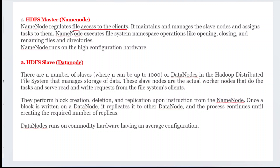All types of file permissions — reading and writing — are controlled completely by the name node. It maintains and manages the slave nodes, assigns tasks to them, and executes file system namespace operations. These operations include opening, closing, and saving files. All these file-related operations are recorded in the metadata, stored only in the master node. The name node runs on high-configuration hardware only.